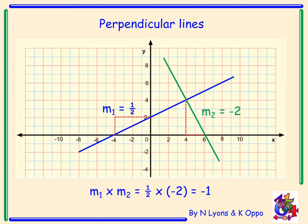Now m1 times m2 for this example is a half times minus two which gives me minus one. Now I could go through lots more examples but this is always the case for two perpendicular lines. The gradients always multiply together to give me minus one.